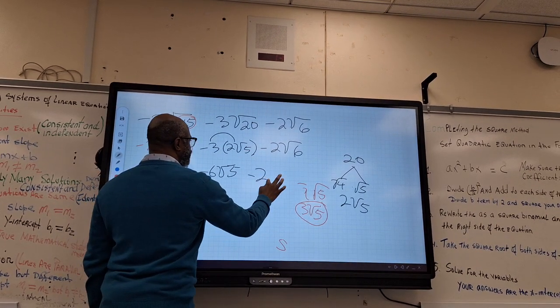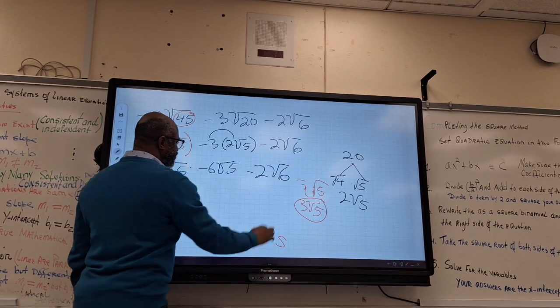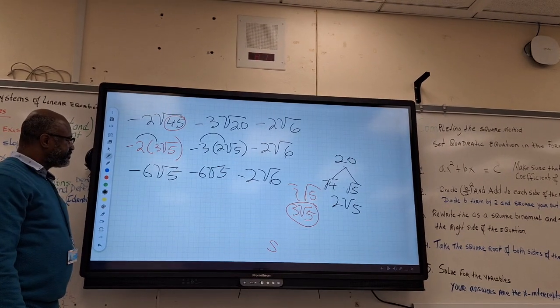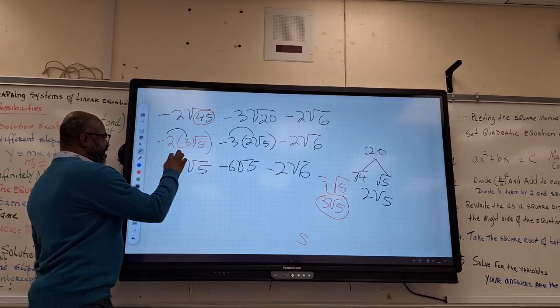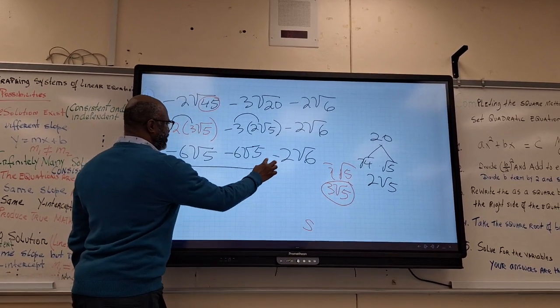Minus 2 root 6. Which are the like terms now? Those are your like terms. This can be combined.